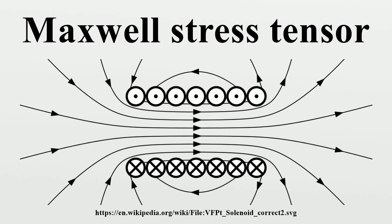Unlike forces due to the pressure of an ideal gas, an area element in the electromagnetic field also feels a force in a direction that is not normal to the element. This shear is given by the off-diagonal elements of the stress tensor.